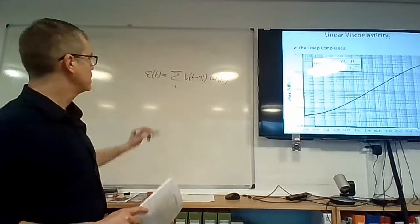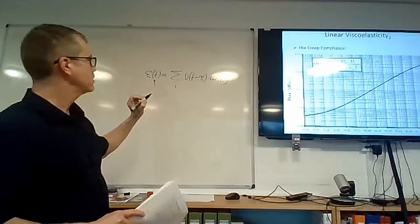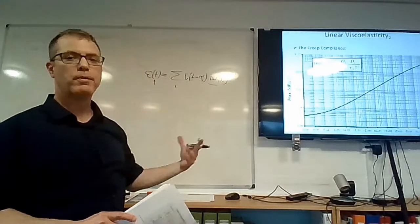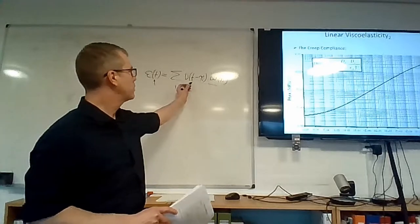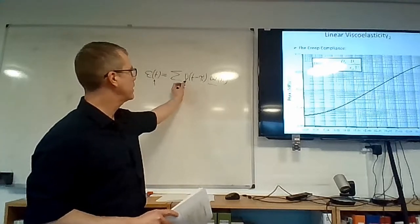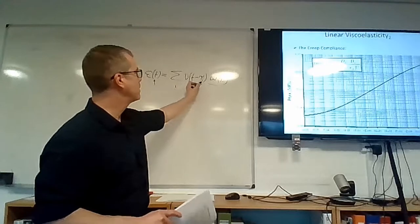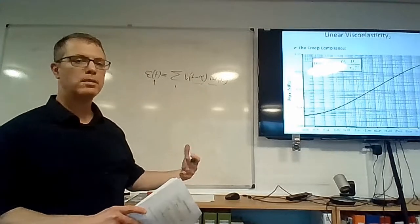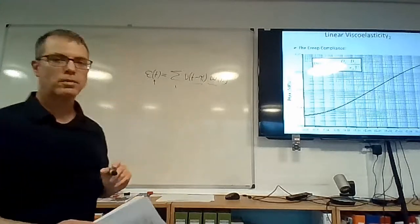This is the discrete version. It says that the strain at any time t of interest is a summation of all the stress steps that occurred before the current time, and each one of them is scaled or multiplied by the creep compliance, taking into account the time elapsed between the current time when we are interested in a strain value to the time when the stress step was applied.